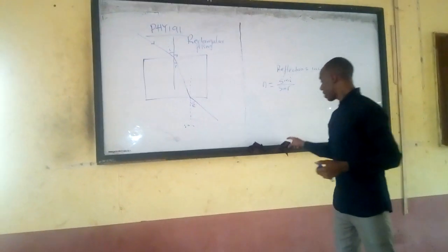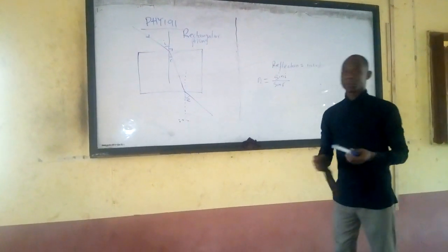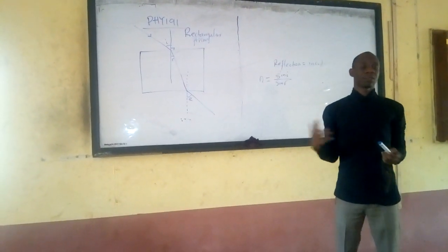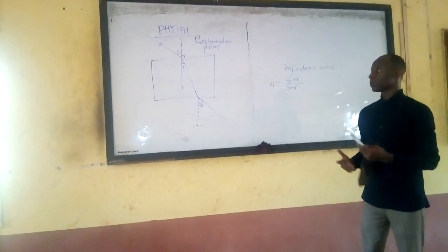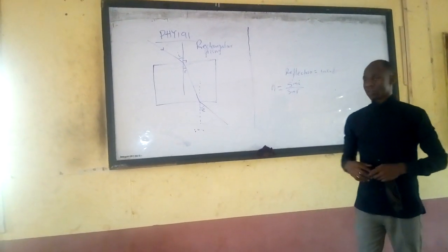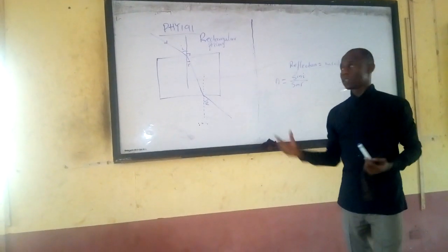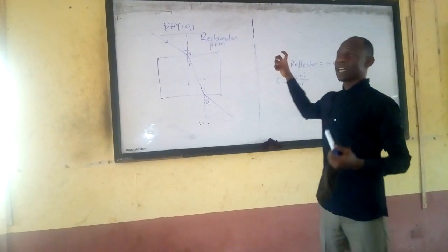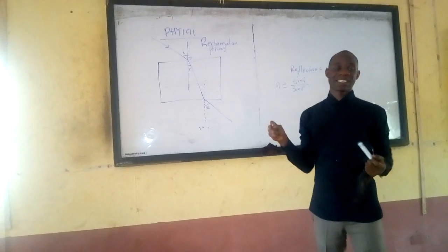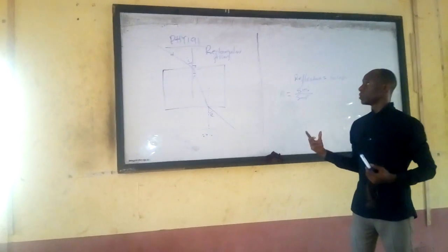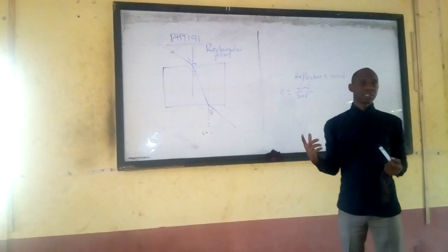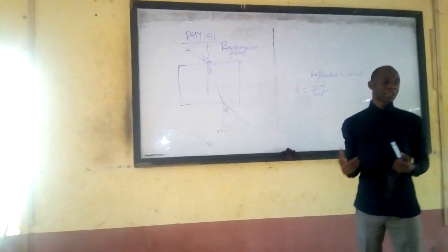You have refractive indices of different materials — water, glass, and all those things. Because this is the rectangular glass prism, we know the refractive index of this glass.